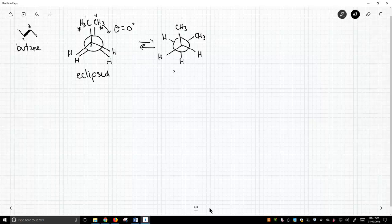So we get here, this is called a stagger. This is a staggered conformation with a dihedral angle of 60 degrees.